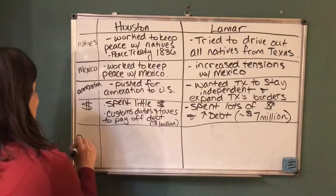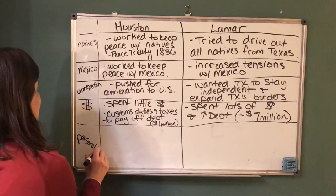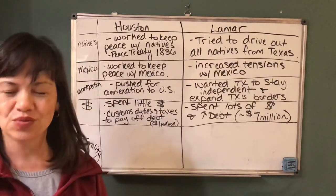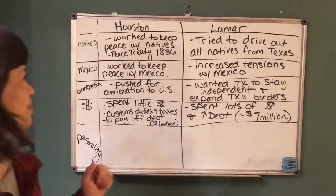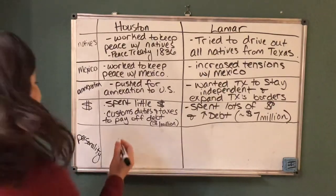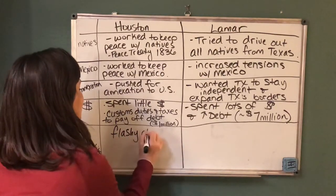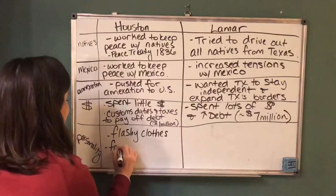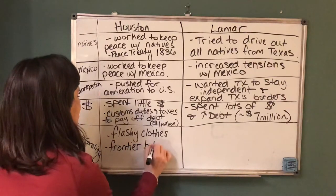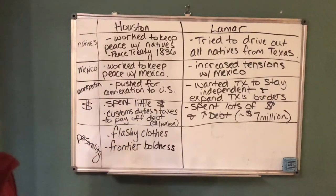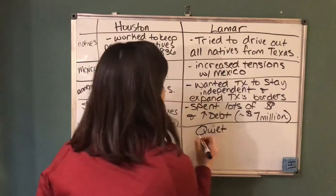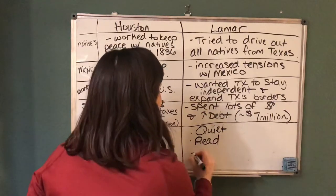The last category is personality. Sam Houston wore flashy clothes — remember that political cartoon showing him in buckskin — and was described as having a lot of frontier boldness. He was a tough guy who won the Battle of San Jacinto in 18 minutes. Mirabeau Lamar, on the other hand, was quiet — he read books and wrote poetry. They were very different personalities as leaders.